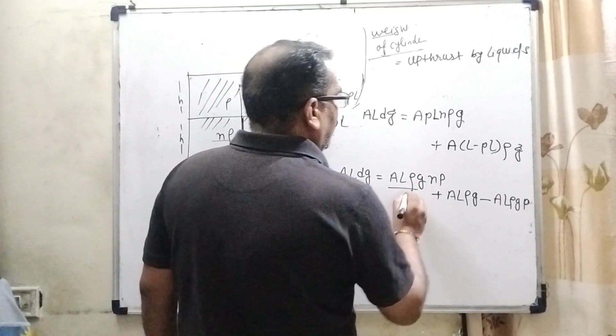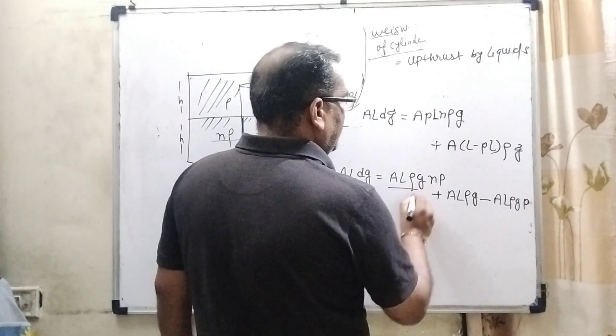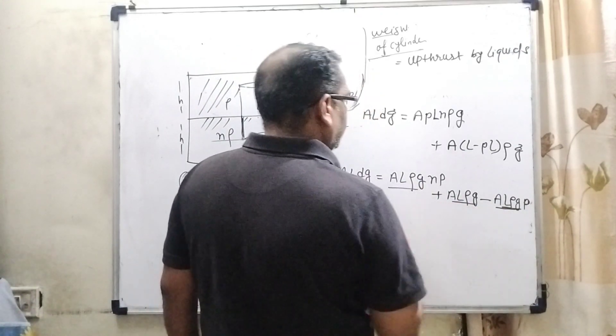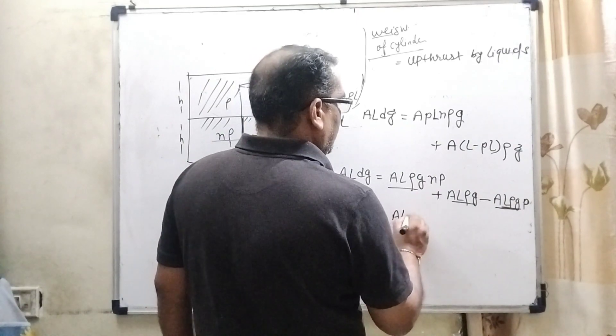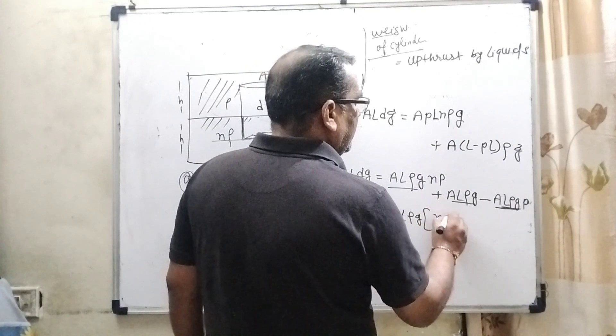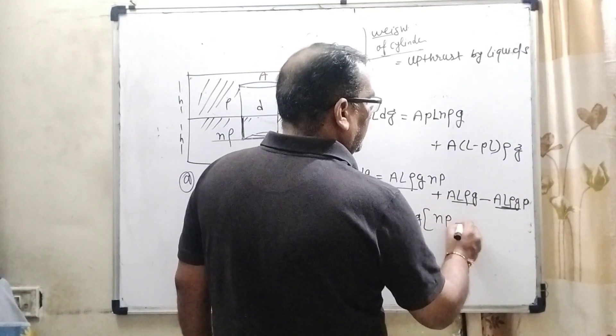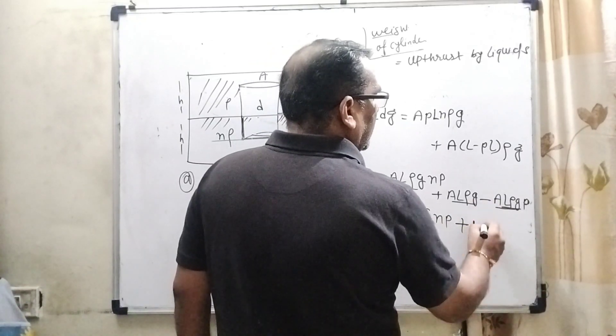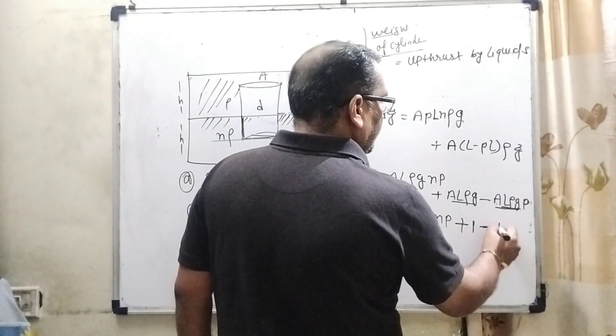Now we can see that ALρg appears in multiple terms and can be taken as common. So ALρg is common, and the remaining terms are np, plus 1, and minus p.